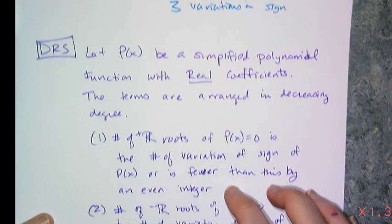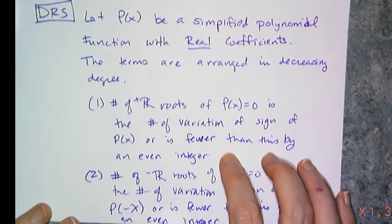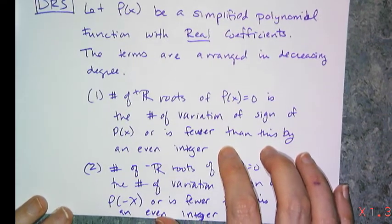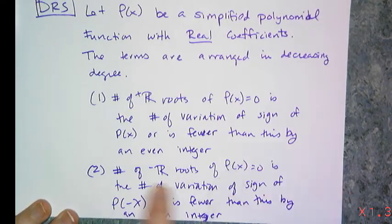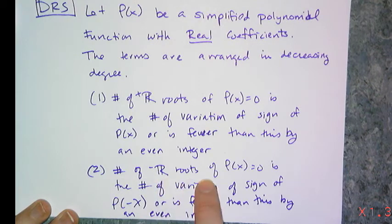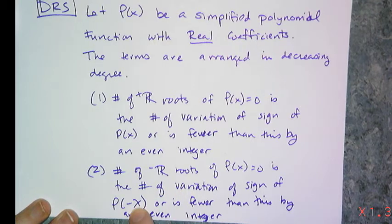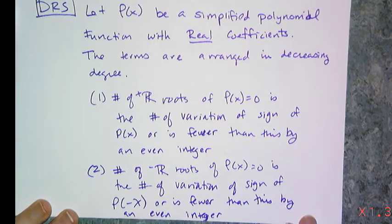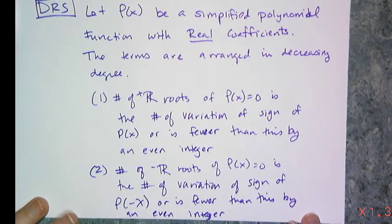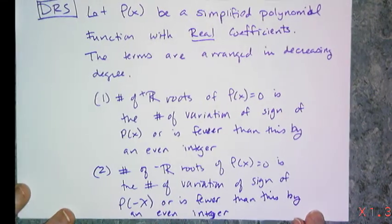The second part of the theorem talks about negative real roots. It says the number of negative real roots of p(x) = 0 is the number of variations of sign of p(-x), or fewer than this by an even integer.